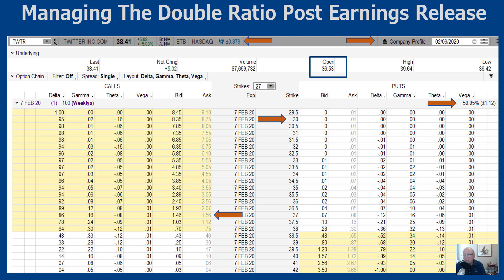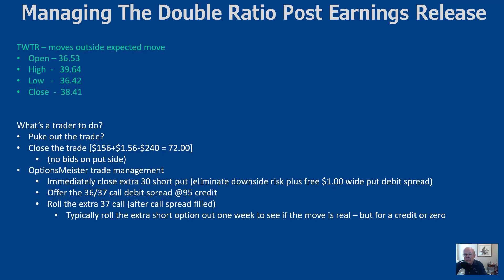The short calls had jumped up to $1.56 each. One option is to simply close the trade — buy back the two $37 short calls for $1.56 each, then sell the long $36 call for $2.40. That costs about $72 to close, and since we collected $0.48, we'd take a $24 loss and move on. That's a perfectly valid approach, but I'd encourage you to be consistent — if you're going to close early, always do it that way.